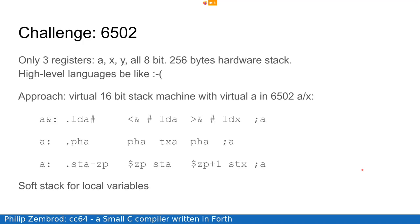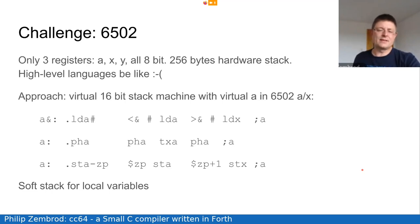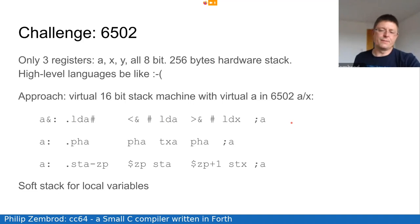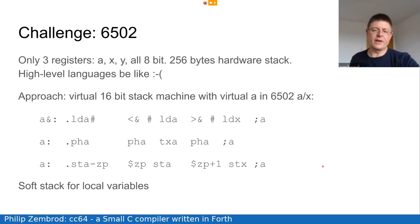One of the challenges for the whole thing was the processor I was sitting on: only three registers, all eight-bit, an eight-bit hardware stack pointer — all not too friendly to a high-level language. The approach I arrived at was to define a virtual 16-bit stack machine: the 16-bit accumulator in A and X, all defined through code templates. So a 16-bit load of a constant means loading the low byte into A and the high byte into X, et cetera. For expressions I'm using the hardware stack; for local variables I'm using a software stack; and I need a few zero-page addresses to work with.